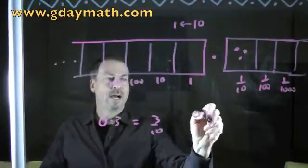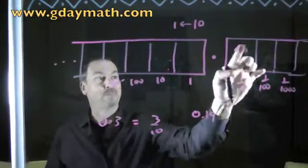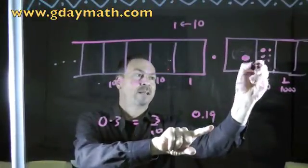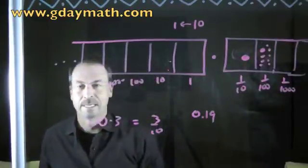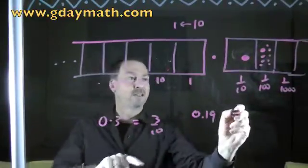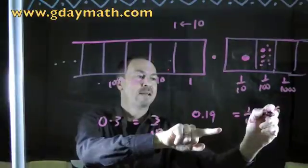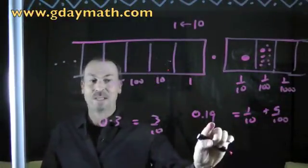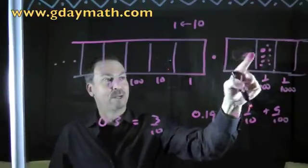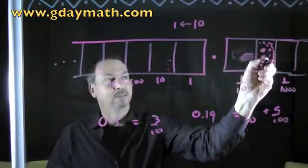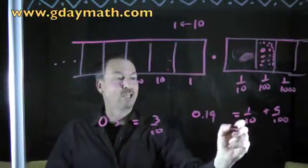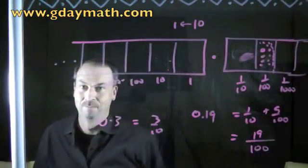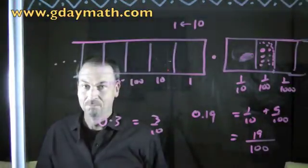For example, 0.19 is actually interesting. 0.19 is literally written as one dot in the tenths place and nine dots in the hundredths place. As a fraction, that's one-tenth and nine-hundredths. But if you like, some people call this nineteen-hundredths. You can unexplode this one dot and get an extra ten in here. So you could think of this as 19 dots in the one-hundredth position.